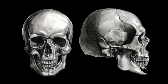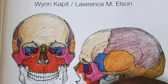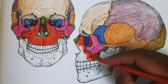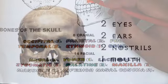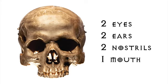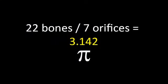One last mathematical gem incorporated into the human body is found in the skull. The skull is composed of 22 bones: 14 make up the facial bones and the remaining eight compose the cap. These 22 bones ultimately create seven orifices — two eyes, two ears, two nostrils, and one mouth. 22 bones of the skull divided by seven orifices is once again 3.142 — an approximation of the number pi.